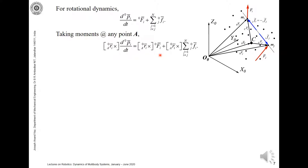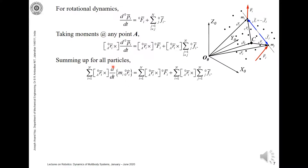On the right-hand side we have the moment of the force on the i-th particle about point A, plus the moment due to all the internal forces from the other particles acting on the i-th particle. When we sum up all these moment equations for all the particles, we place a summation sign before each term. The moment for the i-th particle is given by the summation of moments of the forces about point A, plus the resultant of all those moments added together.